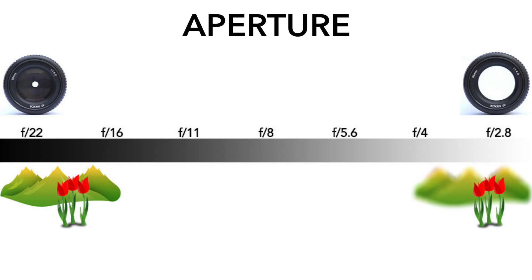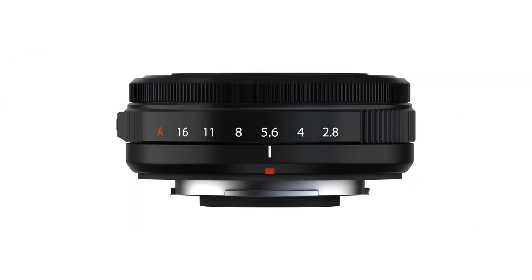Calculating stops of ISO and shutter speed is pretty straightforward, but the stop scale for aperture is a bit more complex. As you see here, each number represents a full stop, from small apertures on the left to large apertures on the right. These numbers look a little different because they're actually ratios — ratios of the aperture opening to the lens length, which affects how much light is transmitted — but you can commit them to memory in no time. The range of aperture available to you will vary depending on your lens, not your camera, like the other variables. Here's an example of an aperture scale showing whole stops on a lens.